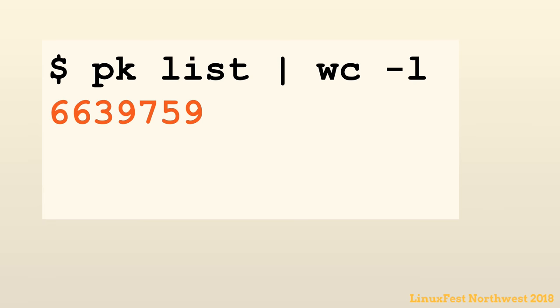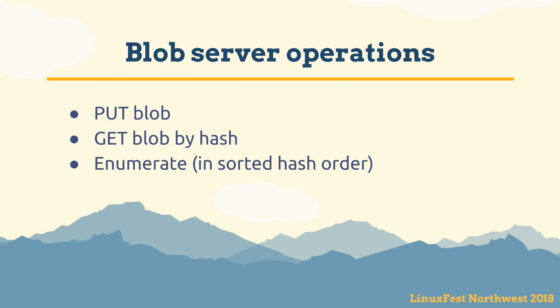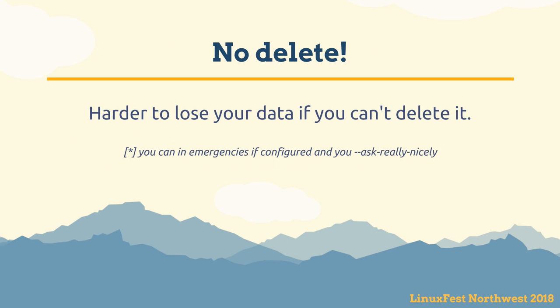On my personal instance I currently have about 6.6 million blobs. The blob server supports three operations: put a blob, get a blob by hash, or enumerate all blobs in sorted order. Notably, there's no delete. It's much harder to lose your data if we don't let you delete it. There is a way to delete in emergencies, but we make it very hard — you have to restart in special modes.